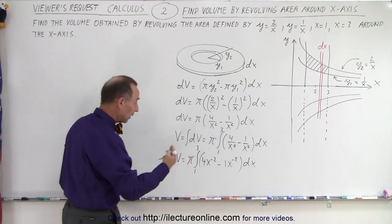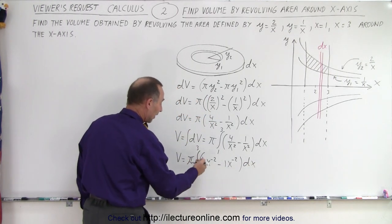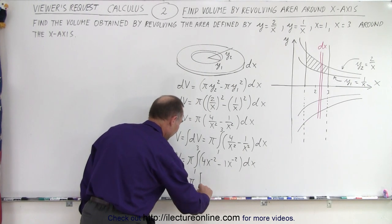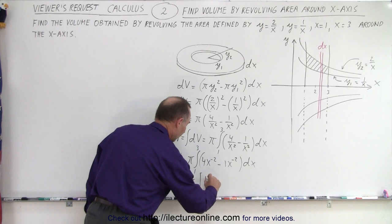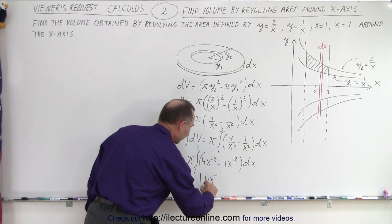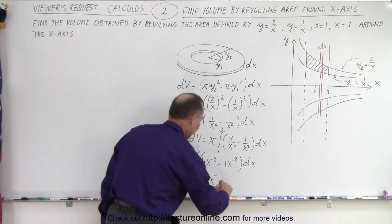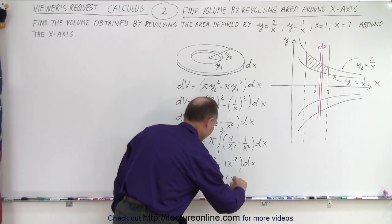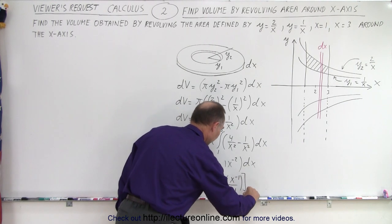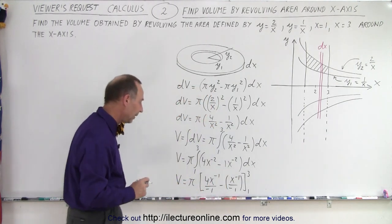And now we're ready to integrate. When we integrate, we add one to the exponent and divide by the new exponent. So volume equals π times, here we get 4x^(-1) divided by -1, minus x^(-1) over -1, and that would be from 1 to 3.